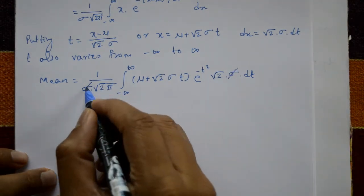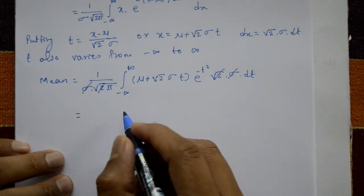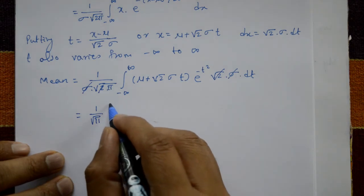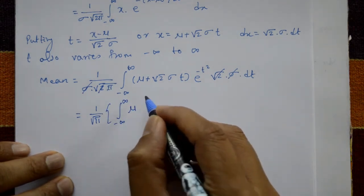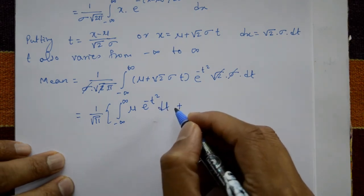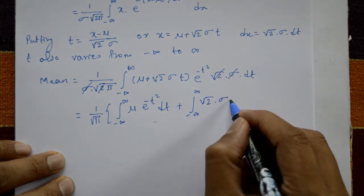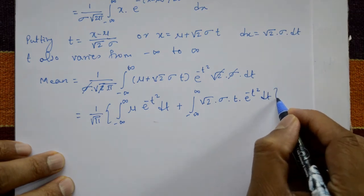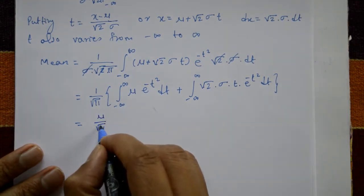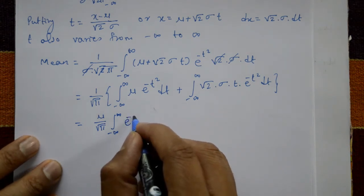Sigma cancels and root 2 cancels, leaving 1 over root pi. Separating into two terms: the first term is (mu over root pi) times the integration from minus infinity to plus infinity of e raised to minus t square dt, plus the second term (root 2 times sigma over root pi) times the integration from minus infinity to plus infinity of t times e raised to minus t square dt.